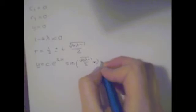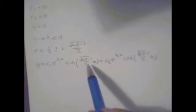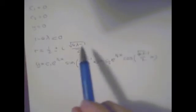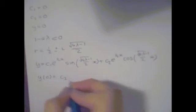The 1/2 is the real part of the complex root, and √(4λ-1)/2 is the imaginary part corresponding to the sine and cosine terms. Applying y(0) = 0 gives c₂ = 0, because sin(0) = 0 and cos(0) = 1, so y(0) = c₂ = 0.